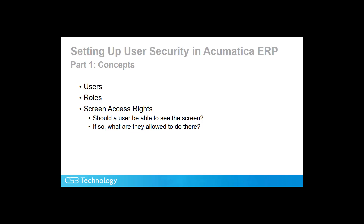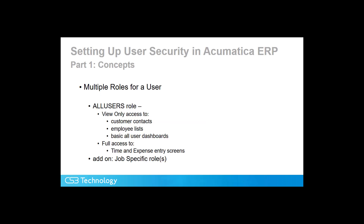These are known as screen access rights. Generally speaking, there will be multiple roles assigned to a user. For instance, we may have a role that is applied to all users that provides view-only access to customer contacts, employee lists, and dashboards. It also provides full access to time and expense entry screens that allows the user to create new entries and delete entries. In addition to that role that all users get, there will be specific job-related roles created and added to different user IDs.